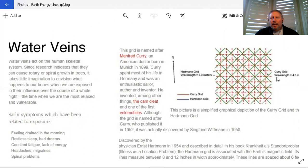It runs about 4.5 meters on center. It's the yellow line. Then we have the Hartman grids here. The difference mainly is that Hartman grids run north, south, and east, west at three meters on center. The Curry grid runs at 45 degrees to those at 4.5 meters on center.